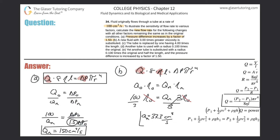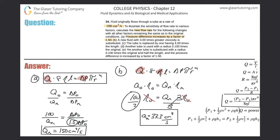And that's what we said should happen. Looking at the formula: if viscosity goes up, then Q has to go down. Viscosity went up by a factor of three, so Q has to be reduced by a factor of three — meaning it has to be divided by three. And that's exactly what we showed.